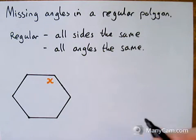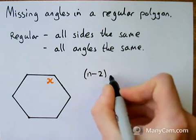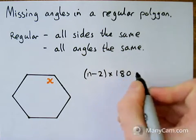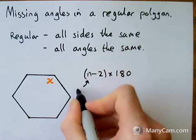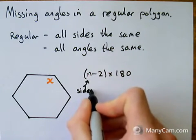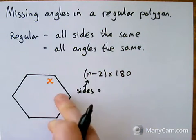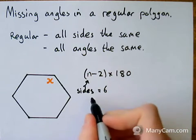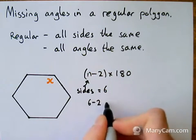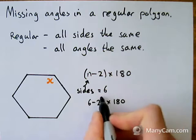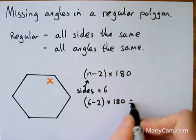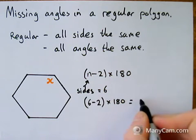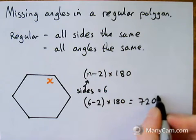So again, I'm going to be using the formula (n-2) times by 180, and this is the amount of sides that this shape has. So the amount of sides that this shape has is 6. So I'm going to do 6 take away 2 times 180, which is 4 lots of 180, which is 720 degrees.